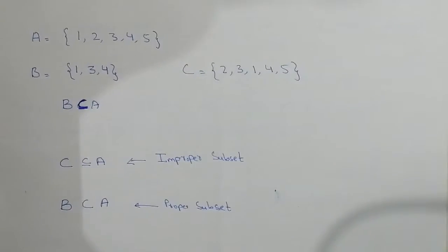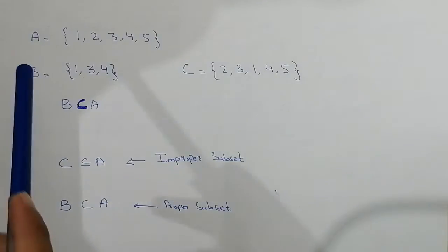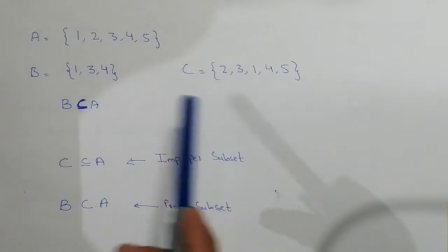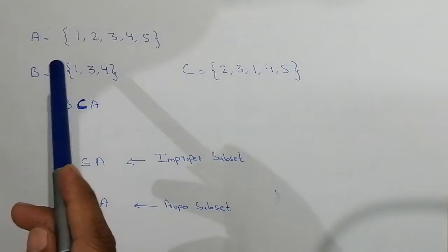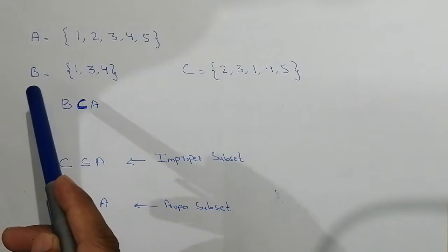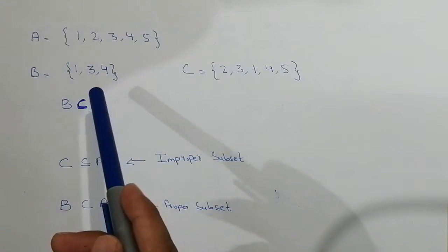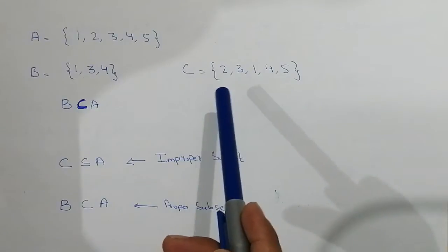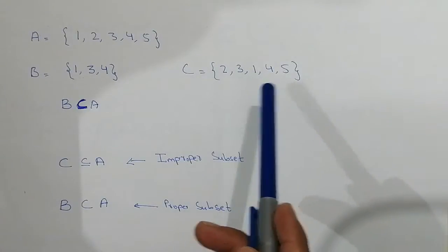Now here we have three sets: set A, set B, and set C. In set A we have the elements 1, 2, 3, 4, and 5. In set B we have the elements 1, 3, 4, and in set C we have the elements 2, 3, 1, 4, 5.